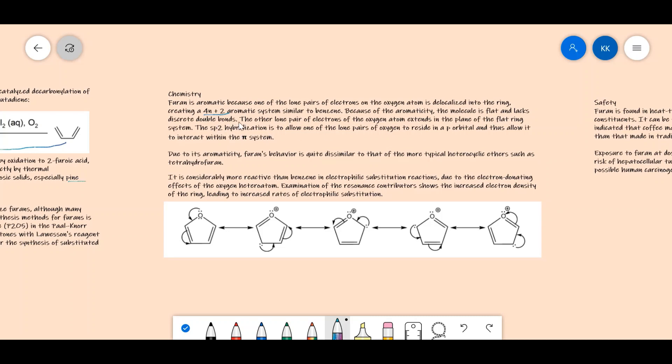Because of aromaticity, the molecule is flat and lacks discrete double bonds—the double bonds are delocalized. The other lone pair of electrons on the oxygen atom extends in the plane of the flat ring system. The sp2 hybridization allows one of the lone pairs of oxygen to reside in a p orbital and thus interact with the pi system.